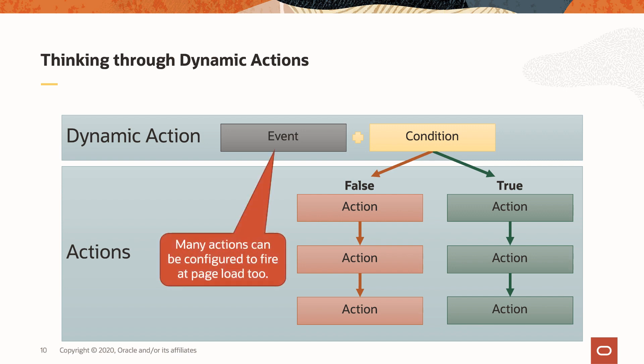It's worth pointing out that although you'll specify the primary event — such as click or change at the parent level — there's another event that's very important for many actions, and that's the page load event. So within actions, you'll find a setting called fire on initialization, that allows you to specify whether or not the action should fire at that time as well. Generally speaking, this setting will default correctly, but you may need to adjust it from time to time.